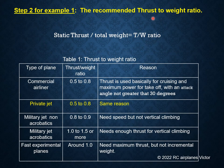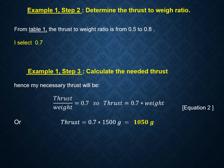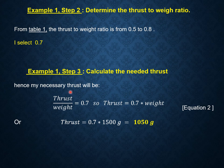The thrust-to-weight ratio is defined as the static thrust produced by the propulsion system divided by the total weight of the airplane. The following recommendations are based on my personal experience with different airplane models that were scratch-built by me. For a private jet, I recommend a thrust-to-weight ratio between 0.5 to 0.8. For step 2, I will select 0.7. For step 3, calculating the needed thrust with this ratio, in this case it is 1,050 grams. I will use this value to select an EDF from the supplier.